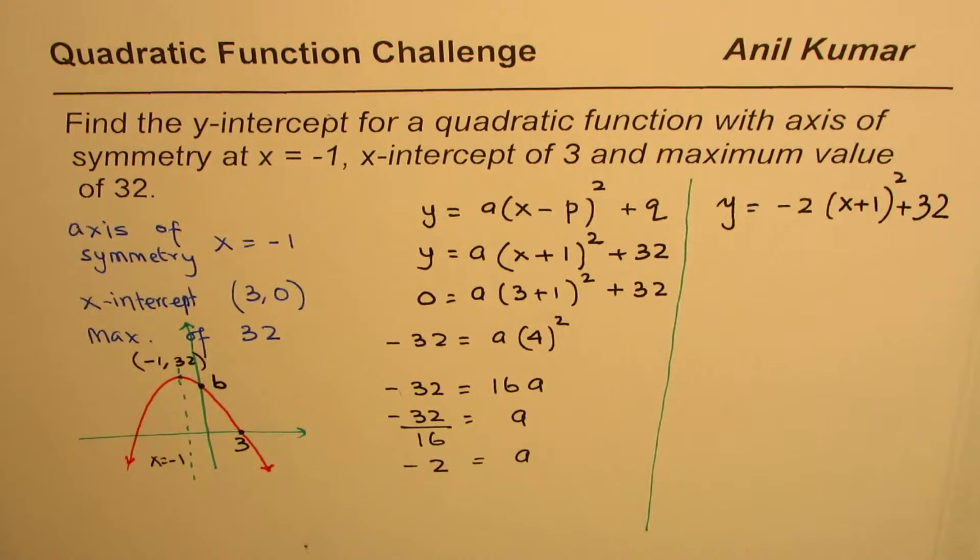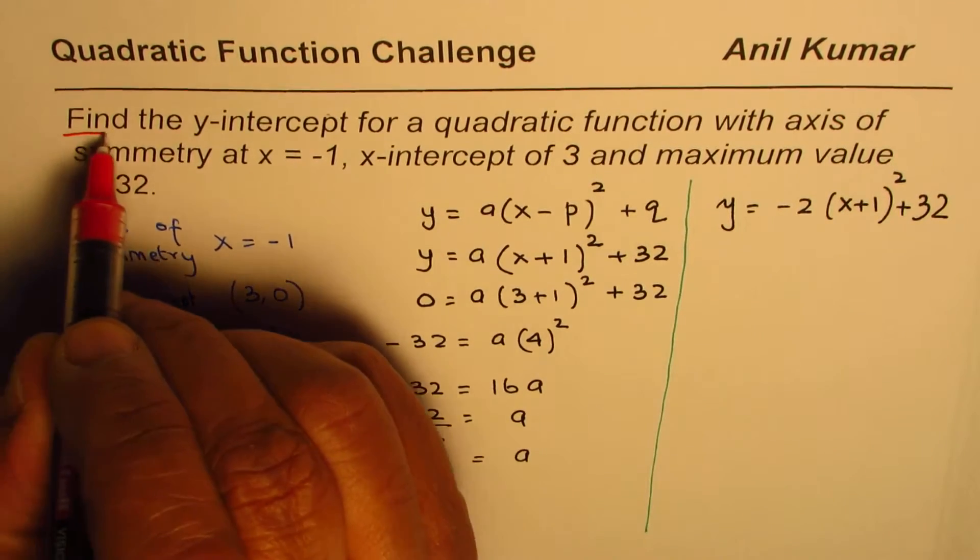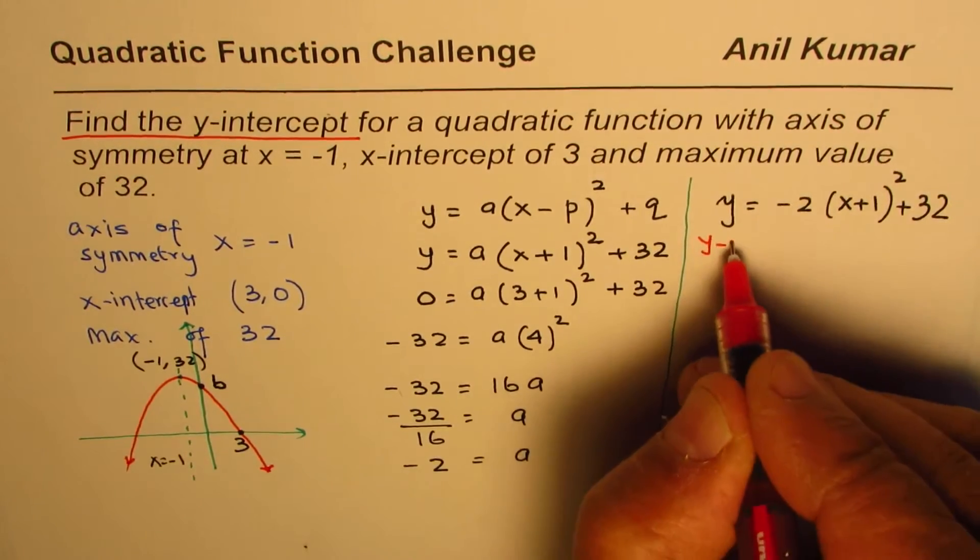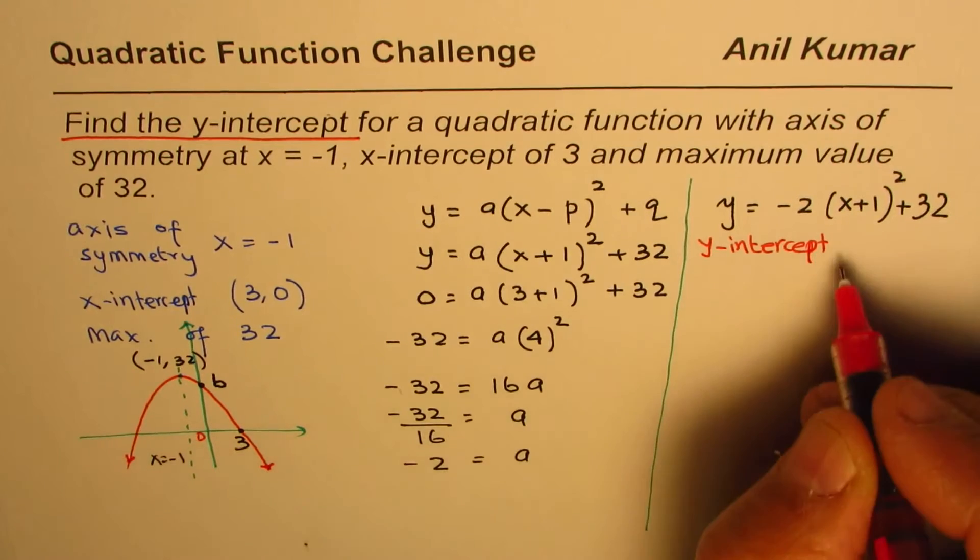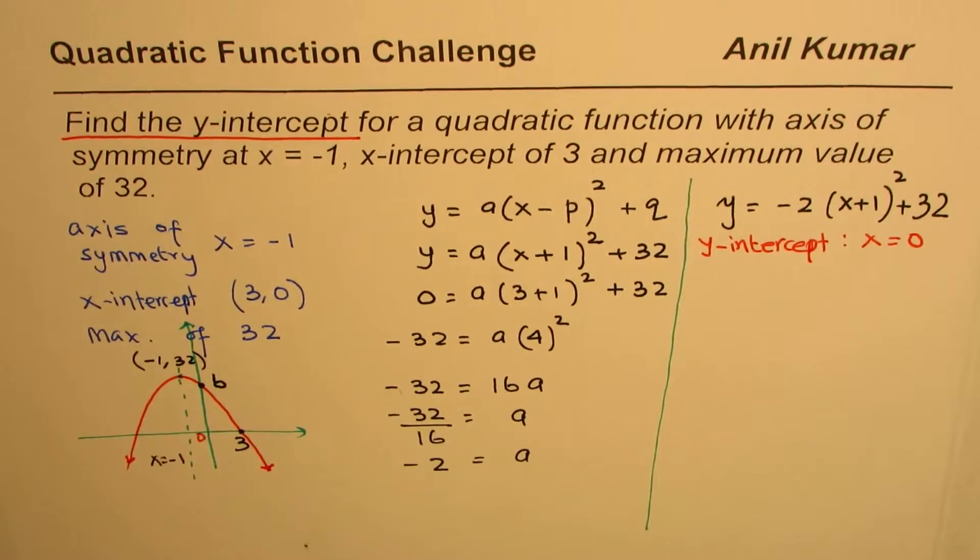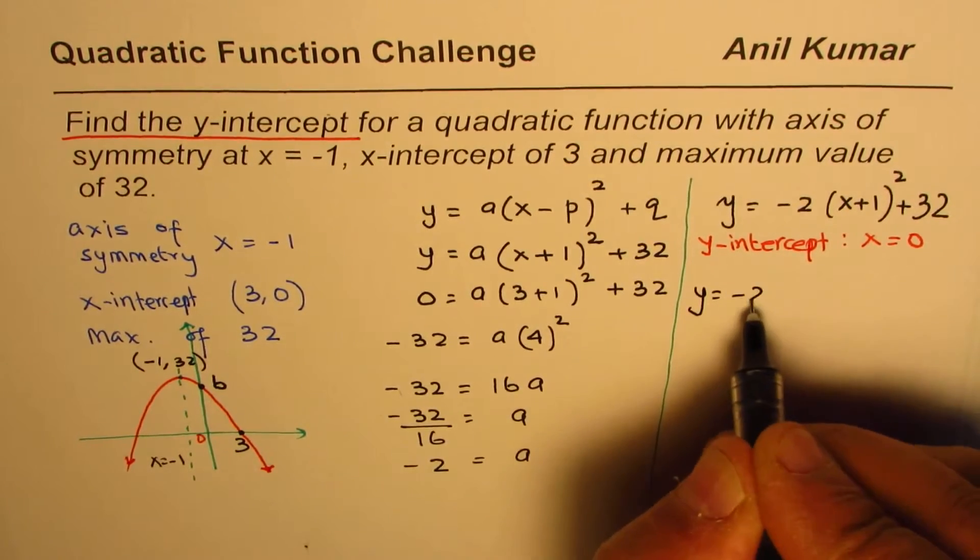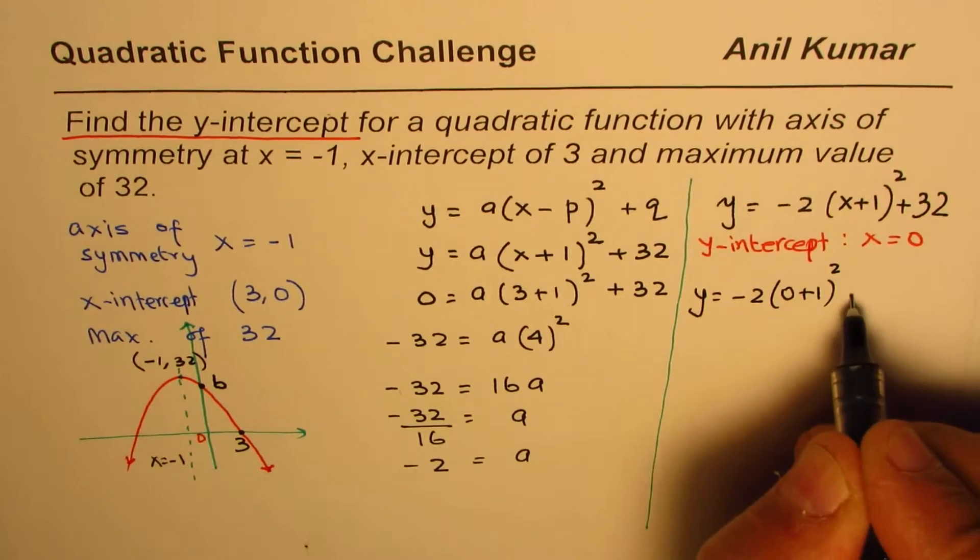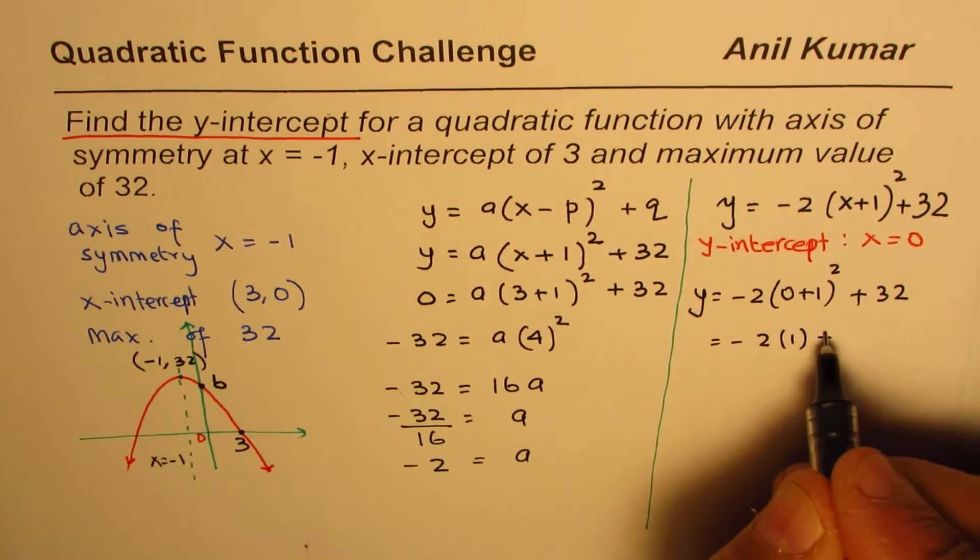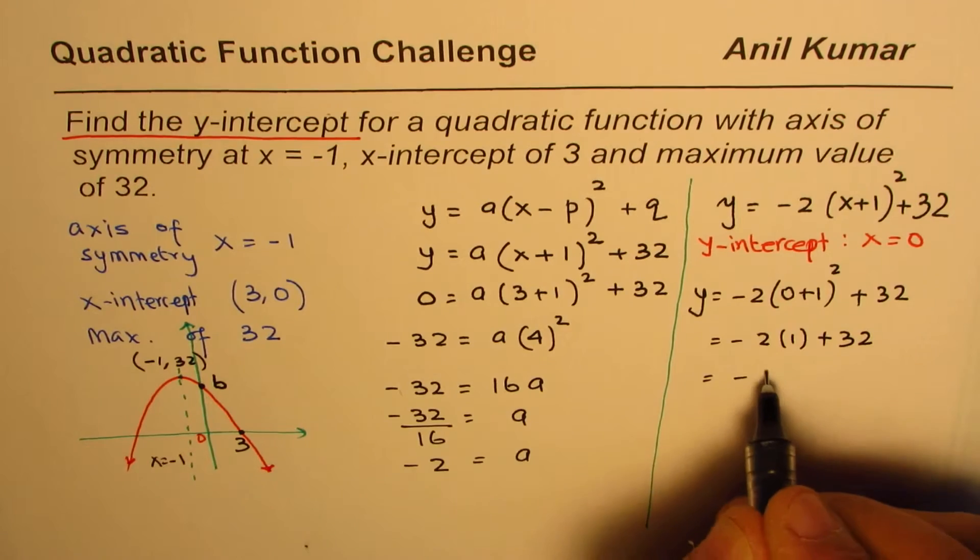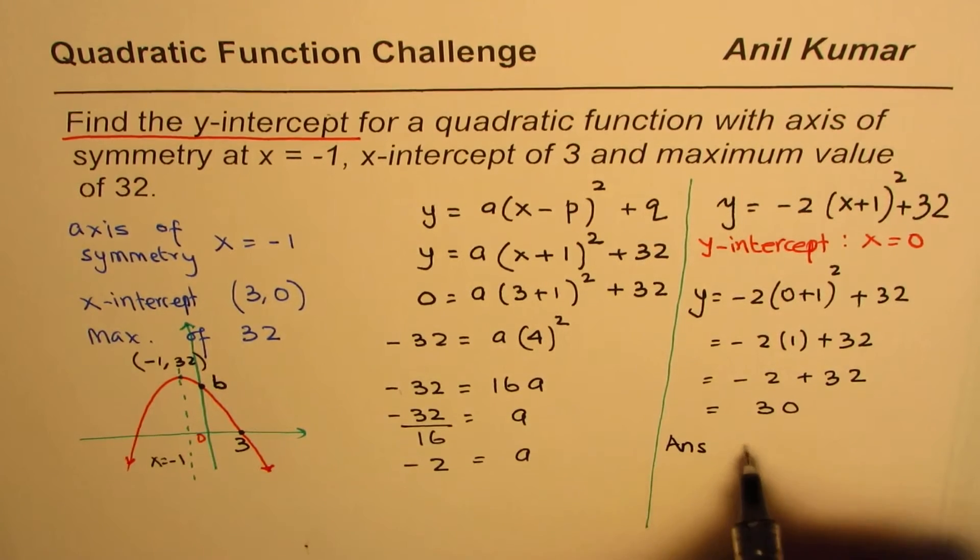Is that okay? So that becomes the equation. Now the question here is find the y-intercept, so we have to find the y-intercept. How do you find y-intercept? Y-intercept is a point here where x is 0, right? So at this point x equals 0. So we'll substitute 0 for x and calculate the y-intercept. So y will equal minus 2 times (0 plus 1) whole square plus 32, and that is minus 2 times 1 plus 32, or minus 2 plus 32, and that gives you a value of 30.